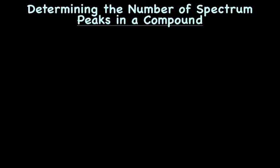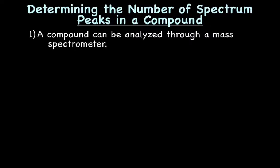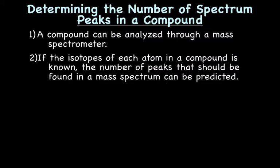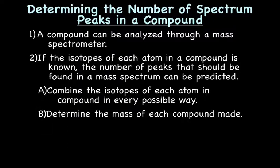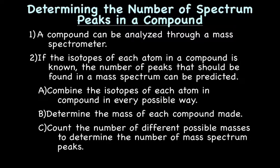The last thing we're going to learn today is determining the number of spectrum peaks in a compound. If you were given a compound, could you predict how many peaks there would be? If you know the isotopes of each atom in a compound, the number of peaks in the mass spectrum can be predicted. You combine the isotopes of each atom in every possible way, determine the mass of each resulting combination, and then count the number of different possible masses to determine the number of peaks.